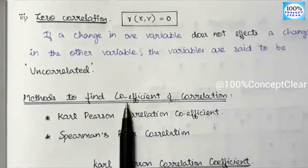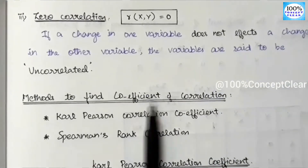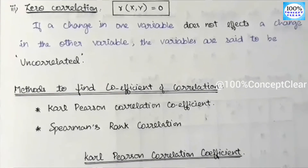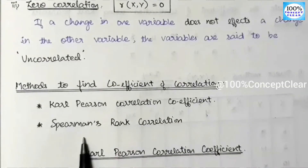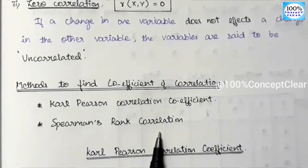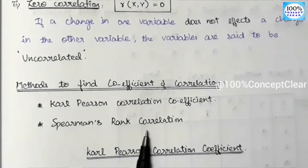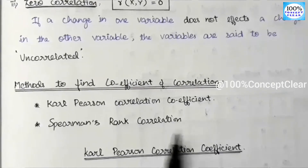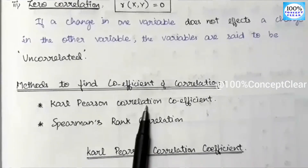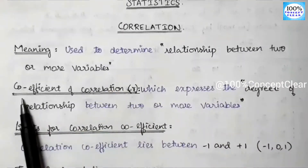Next we have methods to find the coefficient of correlation. We have many methods, but the two most important are: one is Karl Pearson's correlation coefficient, and the other is Spearman's Rank correlation. We have already made videos on these. In this video, we will look at the introduction part — let's see the correlation coefficient. The next video will explain Karl Pearson's correlation coefficient. You can check the link in the description.